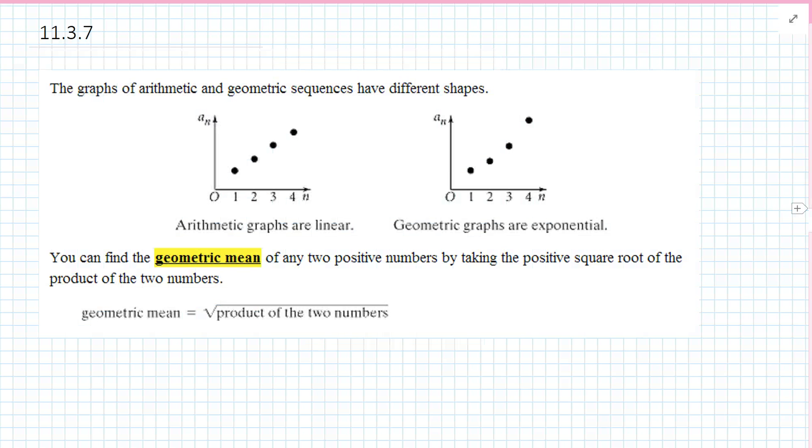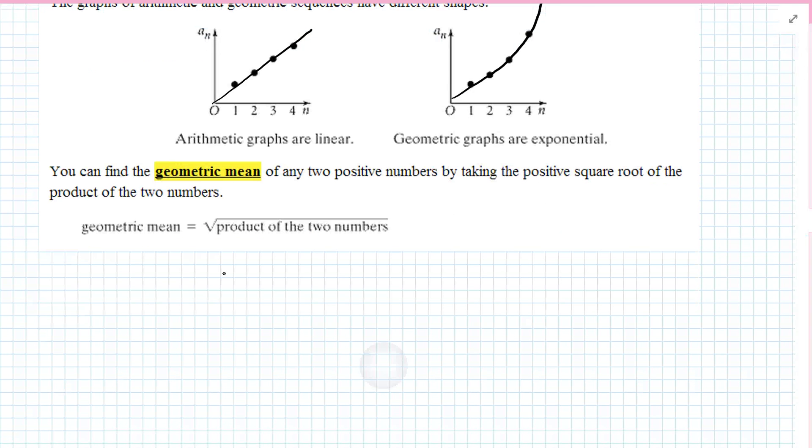The graph of arithmetic and geometric sequence have different shapes. Arithmetic graphs are linear. Geometric graphs are exponential. You can find the geometric mean between any two positive numbers by taking the positive square root of the product of the two numbers. So the geometric mean is the square root of n1 times n3.